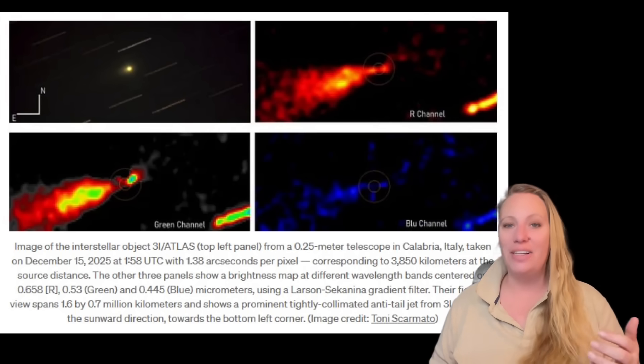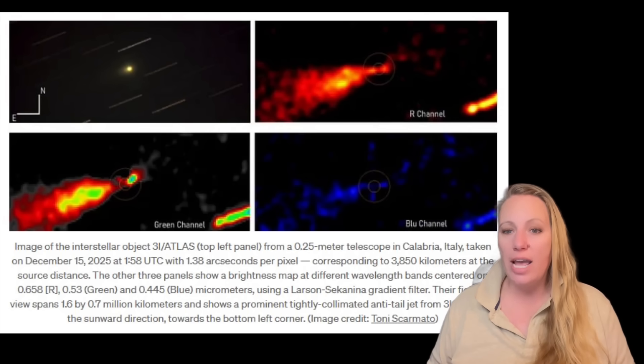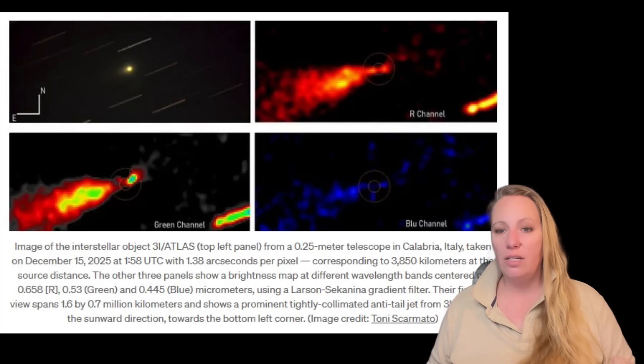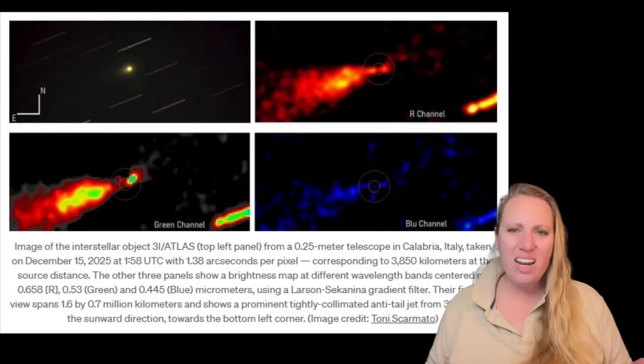It was kind of interesting because on July 1st this year, astronomers at the Asteroid Terrestrial Impact Last Alert System, that's called ATLAS, revealed that they had spotted a mysterious object traveling towards us from beyond Jupiter at more than 130,000 miles per hour. That's 200,000 kilometers per hour.